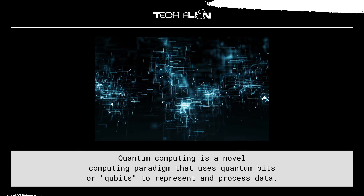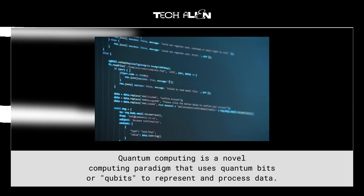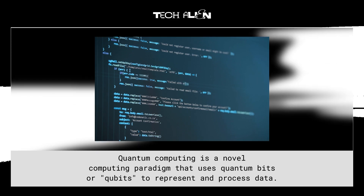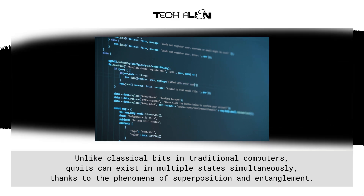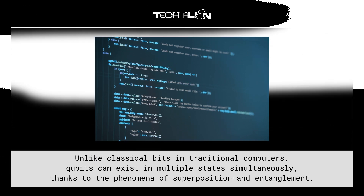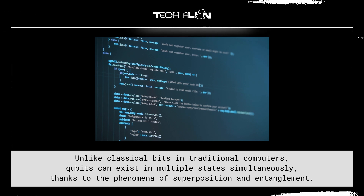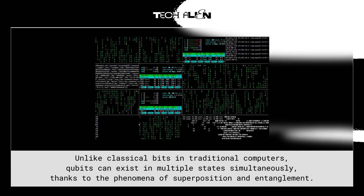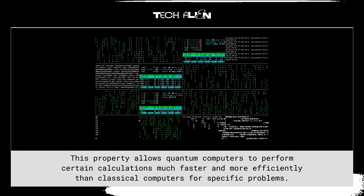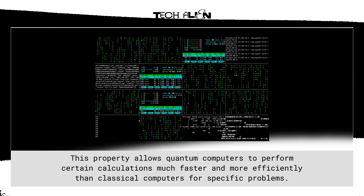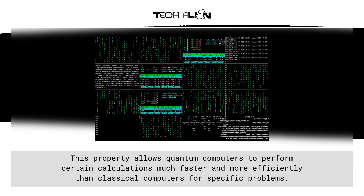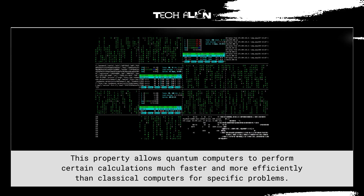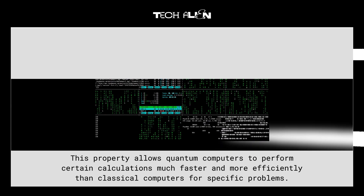Quantum computing is a novel computing paradigm that uses quantum bits, or qubits, to represent and process data. Unlike classical bits in traditional computers, qubits can exist in multiple states simultaneously, thanks to the phenomena of superposition and entanglement. This property allows quantum computers to perform certain calculations much faster and more efficiently than classical computers for specific problems.